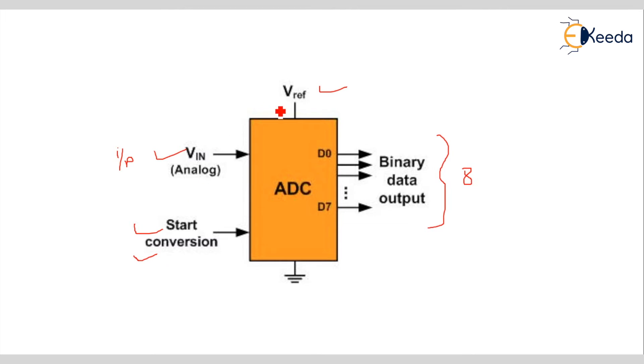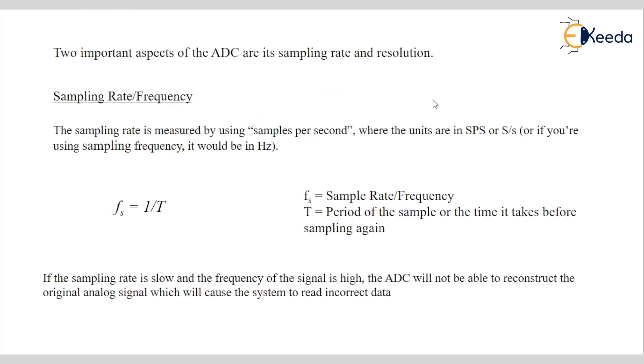Then most important VReference. It is not a VCC. It is VReference. We can give this VReference value from VCC to any minimum value. So, in ADC there are two important aspects are there: Sampling rate and resolution.